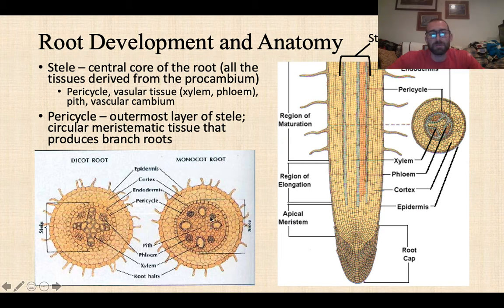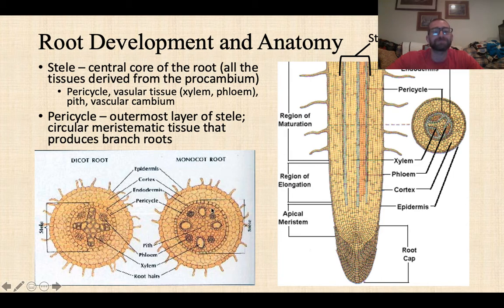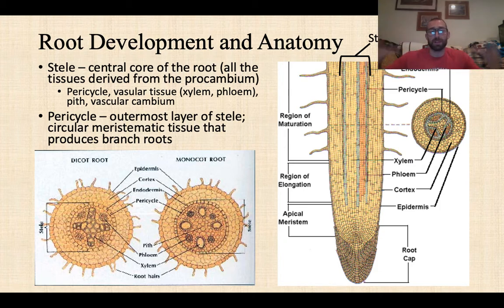In a monocot root, the center of the root is pith — essentially parenchyma cells used for storage — and surrounding the pith are the vascular tissues arranged in a cylinder of alternating xylem and phloem. What you don't have in monocot roots is the vascular cambium, because monocot roots don't grow by secondary growth and don't get thicker in that way.